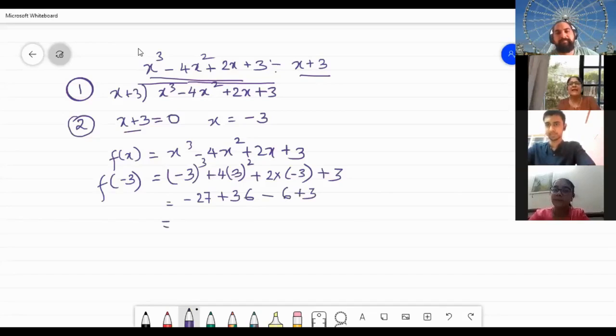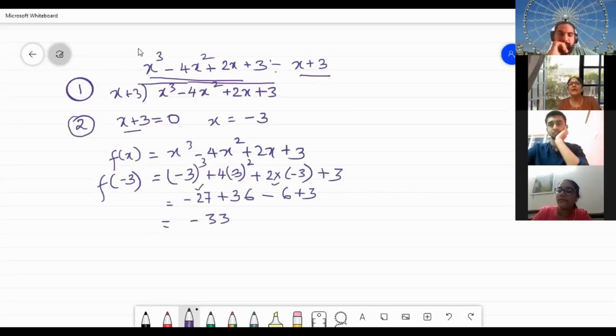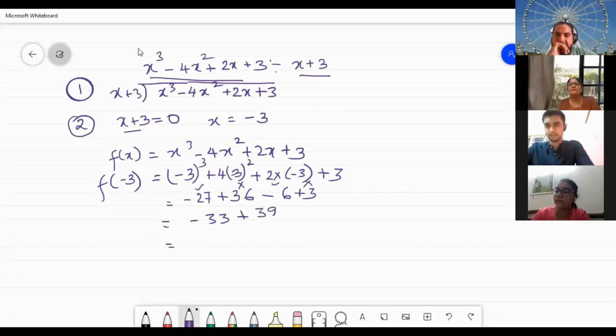So this will be -3 + 6. 6 + 3. So what is the answer? We can add maybe these two first. So this will be -33 and plus 39 because I added this and this. -33 + 39, what will be the answer?